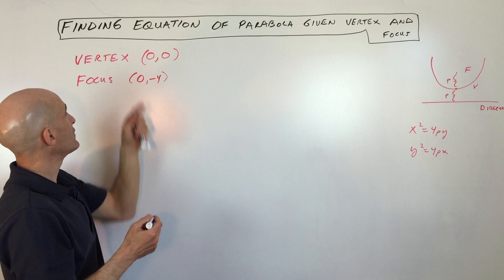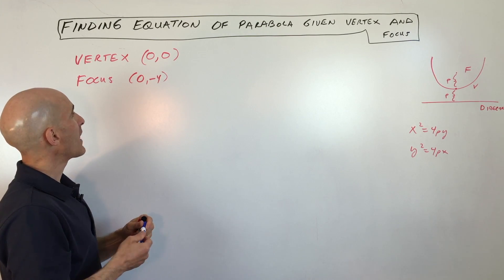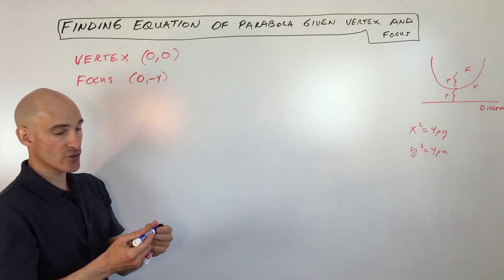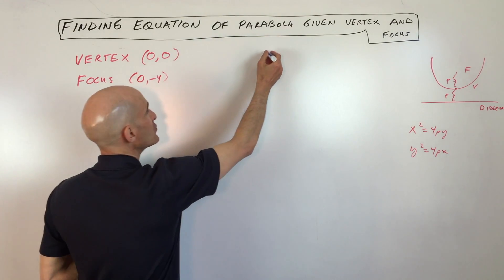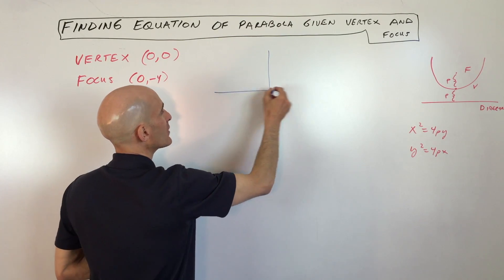So here we're trying to find the equation of the parabola given the vertex zero zero and the focus is zero negative four. Now I always like to draw a sketch. You might want to do the same thing too just to give you an idea of what it looks like.